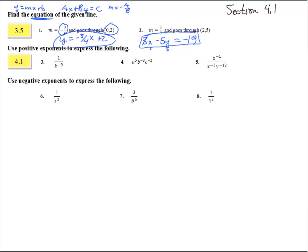So we could have either one of those. You could solve for y and have this in slope-intercept form: y equals 3 fifths x plus 19 fifths. Or you could have written the original as 3x plus 4y equals 8, and you get the exact same equation.